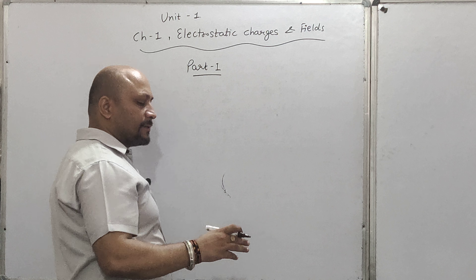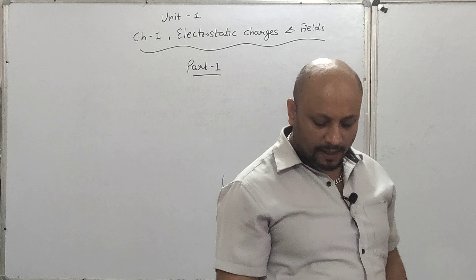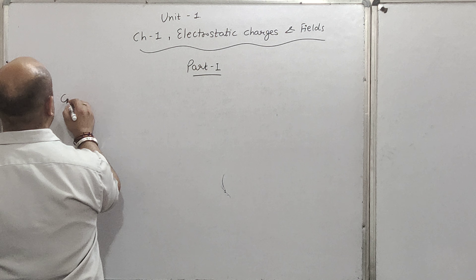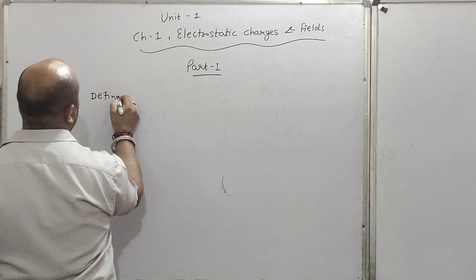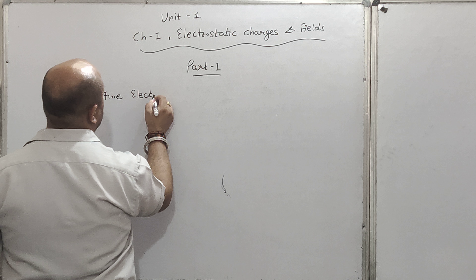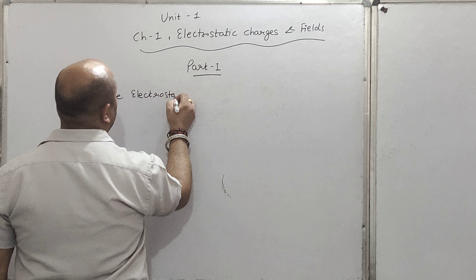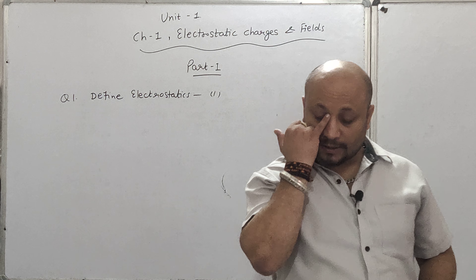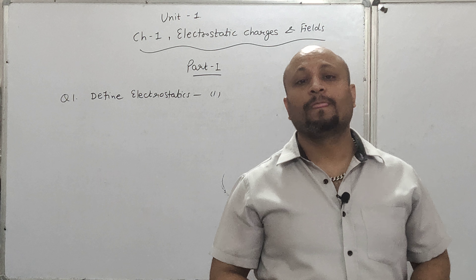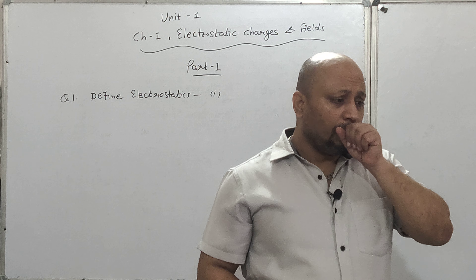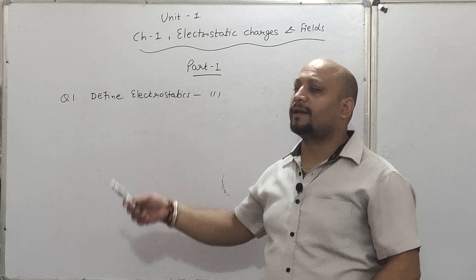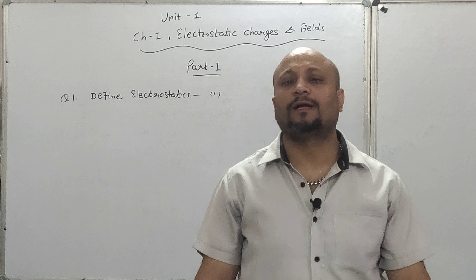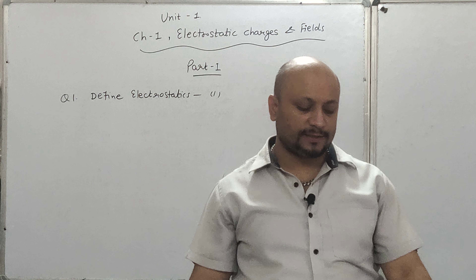अगर आपके पास book है तो ध्यान से देखें — इसमें सबसे पहला topic है Electrostatics। एक number की definition आ सकती है: Define Electrostatics. इसमें आपको electrostatics की definition देनी होगी — 'The branch of physics which deals with the study of charges at rest.' Electro means electric, stating means rest। यह एक number का question है।